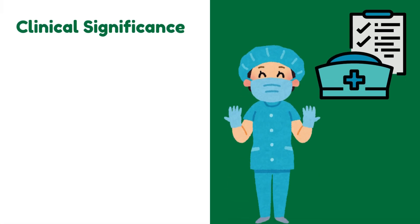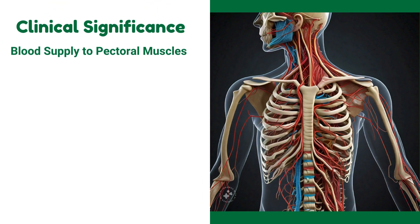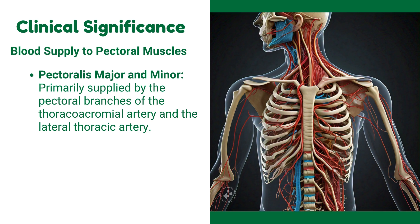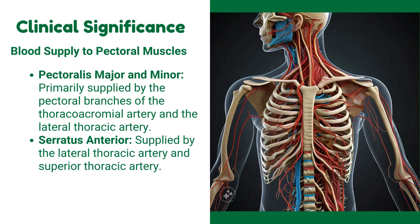Clinical significance: regarding blood supply to the pectoral muscles, pectoralis major and minor are primarily supplied by the pectoral branches of the thoracoacromial artery and the lateral thoracic artery. The serratus anterior muscle is supplied by the lateral thoracic artery and the superior thoracic artery.